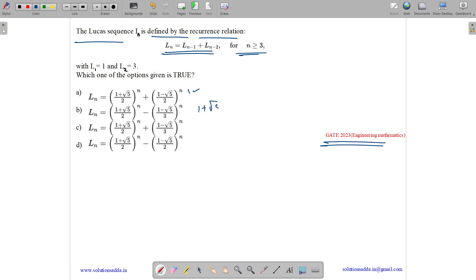For this one, we have 1 plus root 5 by 2 minus 1 minus root 5 by 3. So we have LCM is 6. So 3 root 5, 3 into 2 minus 2 minus 2 root 5. So here we have 3 minus 2, 1 plus 3 root 5 plus 2 root 5 plus 5 root 5 by 6. So this is wrong. And it is not satisfying for n equals to 1.